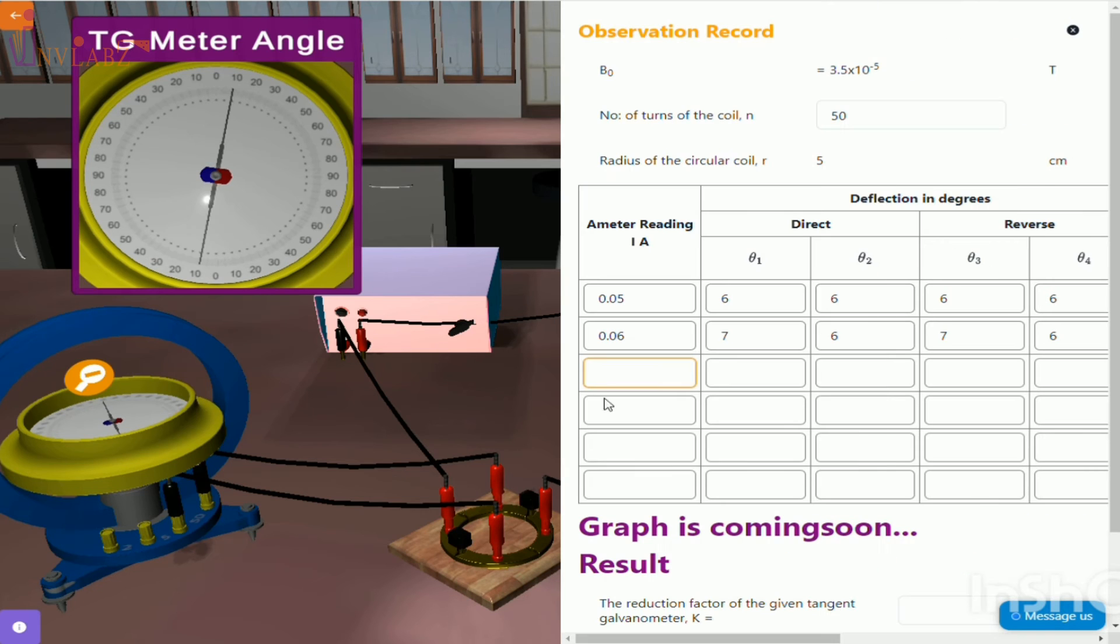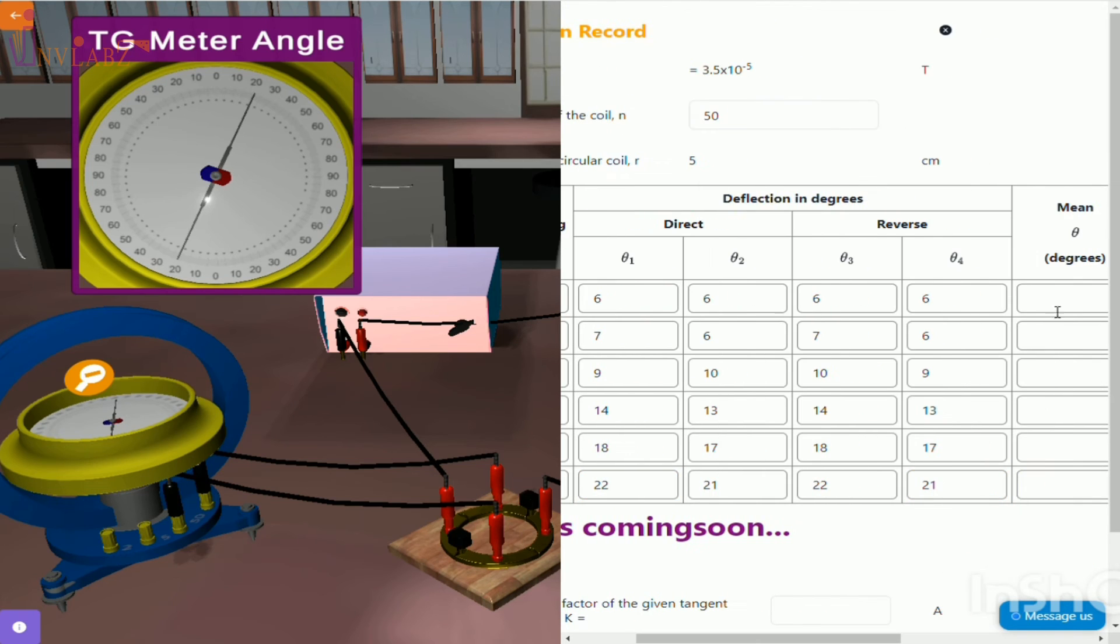Increase the current in the circuit and note down four deflections in the compass box. Repeat the same experiment for different currents in the circuit and record the deflections.